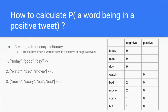The second tweet contains the keywords watch, bad, and movie, and has negative sentiment. The last tweet contains the keywords movie, scary, and bad. As shown in the table, each unique word has its own row with a negative and positive column. We then count how often each word was associated with a positive or negative tweet. For example, the word 'today' was only in the first tweet, classified as positive, so we find the row with today and add one to the positive column. If we look at the word 'bad', there are two negative tweets that contain this keyword, so we go to the bad row and add two to the negative column.